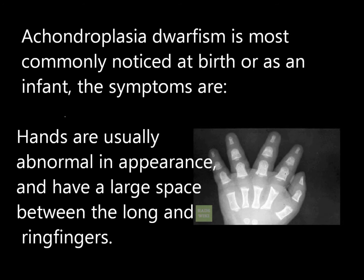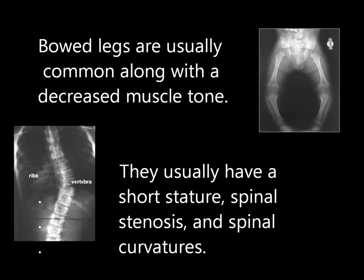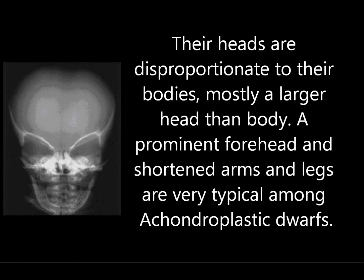People with achondroplasia usually have hands that are abnormal in appearance — broad and flat, with large spaces between each finger. Bowed legs and spinal stenosis are also common symptoms. They have decreased muscle tone and short stature. Their heads are disproportionate to their bodies, mostly larger, and a prominent forehead along with shortened arms and legs are very typical among achondroplastic dwarves.